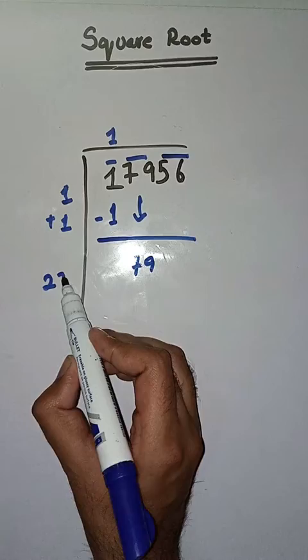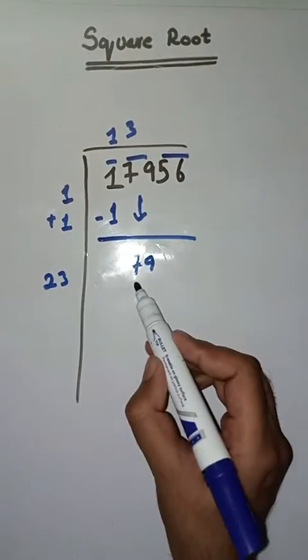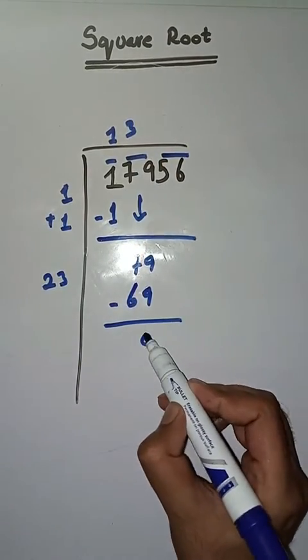Now we will take a number three. 23 times 3 is 69. We subtract 69. Nine minus nine is zero, seven minus six is one.